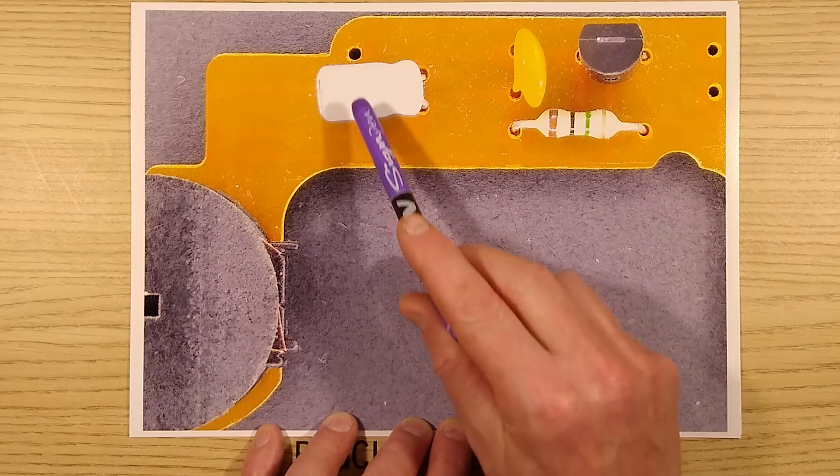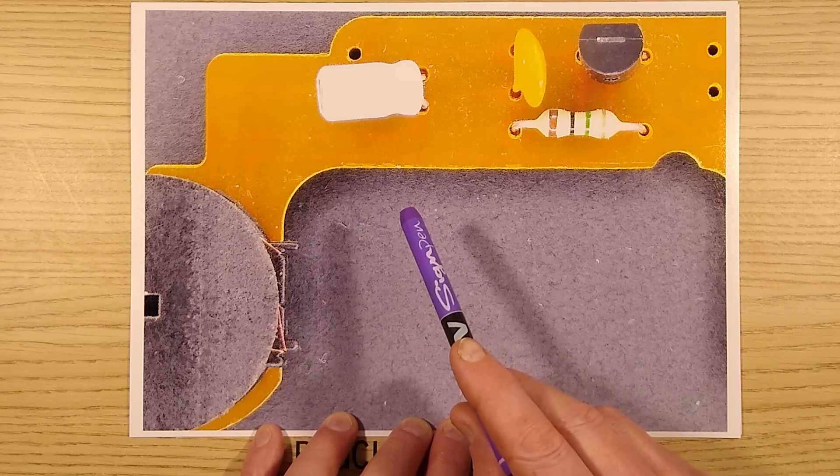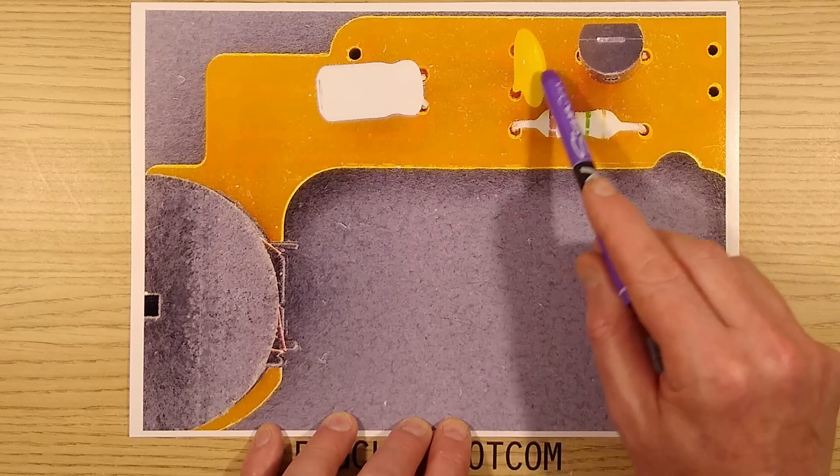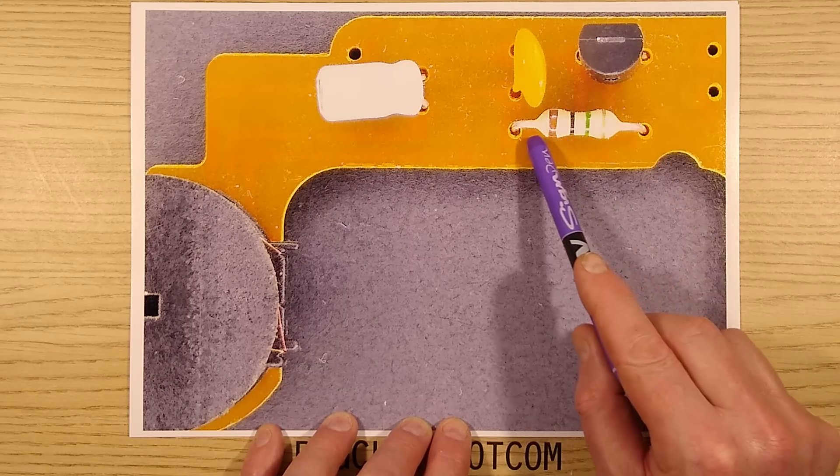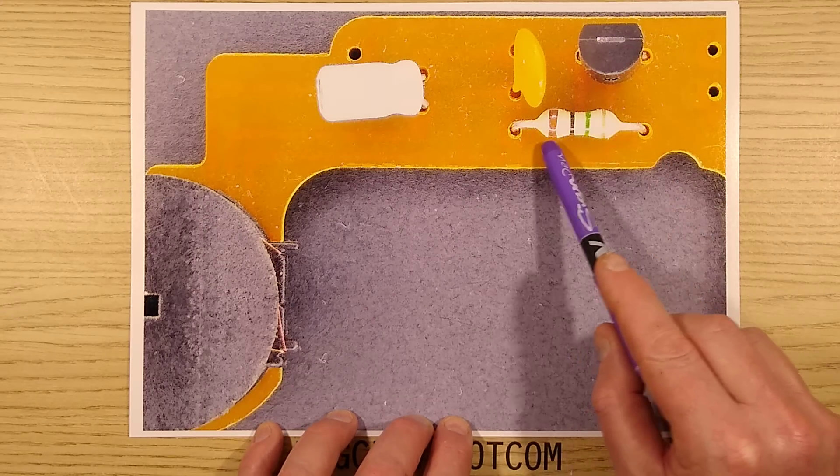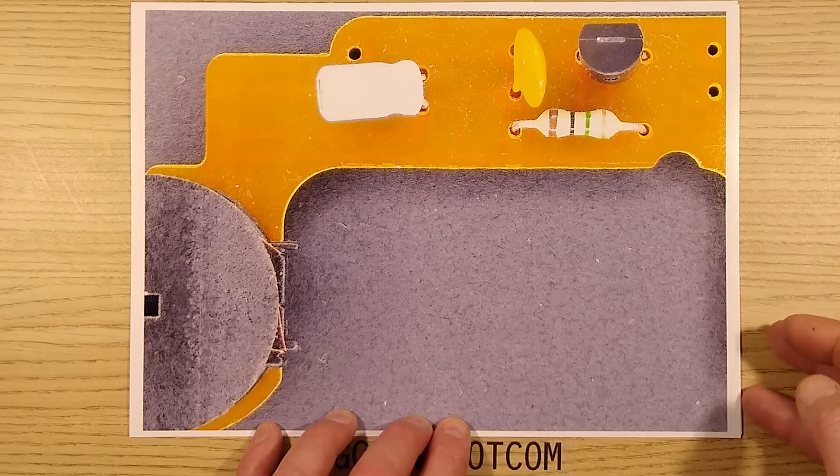There is an electrolytic capacitor which is a value of 47 microfarads. There is a decoupling capacitor 100 nanofarads. There is the transistor and then the very high value 1 megohm resistor which is used to provide a slight bias to that transistor.